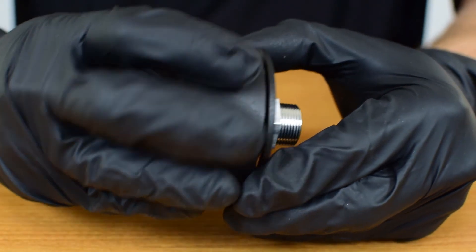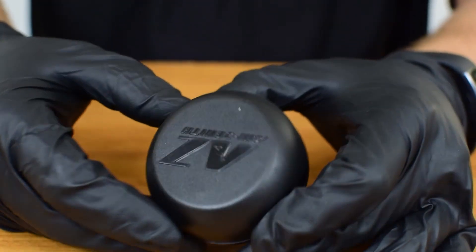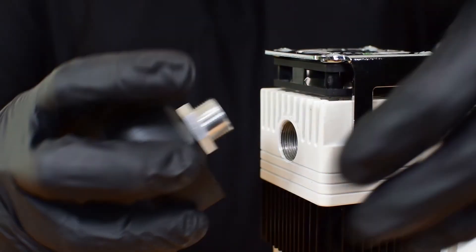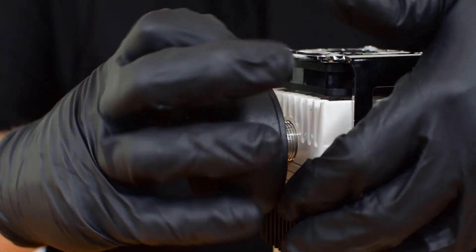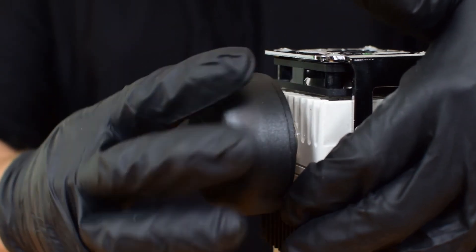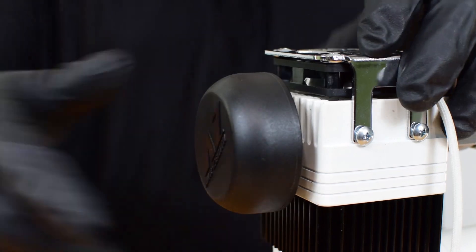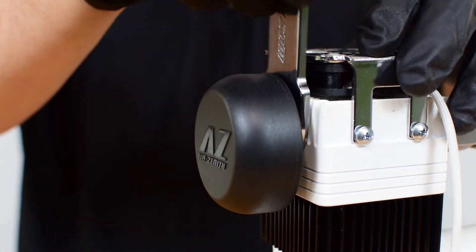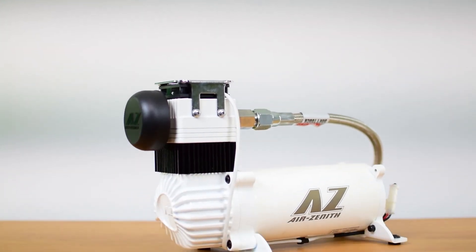This can be done with it still installed on the compressor, but removing it makes it a little bit easier. You can now thread it back onto the compressor clockwise. And once installed back on the compressor, you can use the included wrench to tighten it back up. You have now fully rebuilt your air zenith OB2 compressor. You can now go plug it back in and give it a test run.